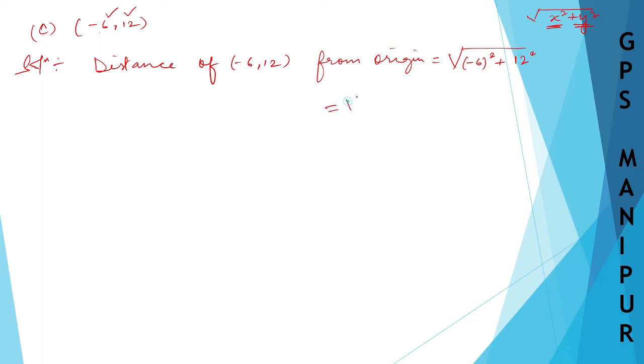Which will be equal to root over... 6 times 6 is 36, plus 12 into 12 is 144. 144 plus 36... 6 plus 4 is 10... gives us 180.